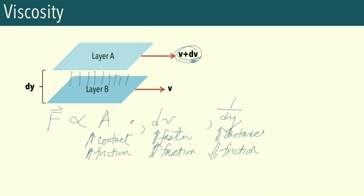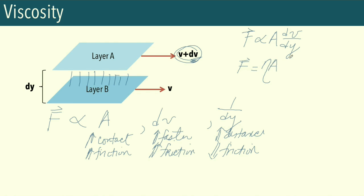Multiplying all these terms together gives us the overall influence on friction: F is proportional to area times the change in velocity divided by the distance between the two layers. To convert this proportionality into an equation, we introduce a proportionality constant eta — written with a fancy n-like symbol. So F equals eta times A times dV/dy. This proportionality constant eta is called the viscosity coefficient.